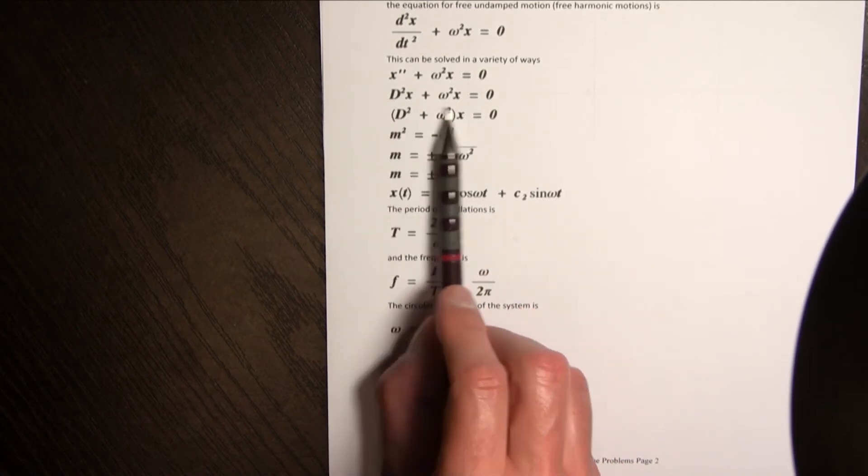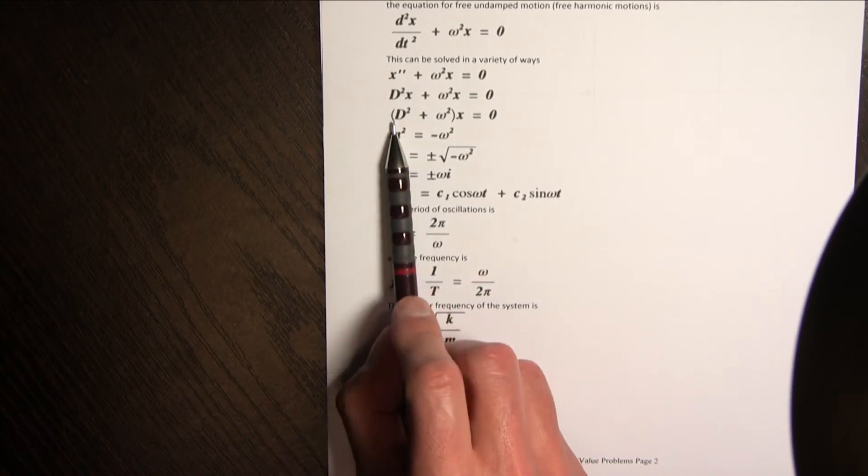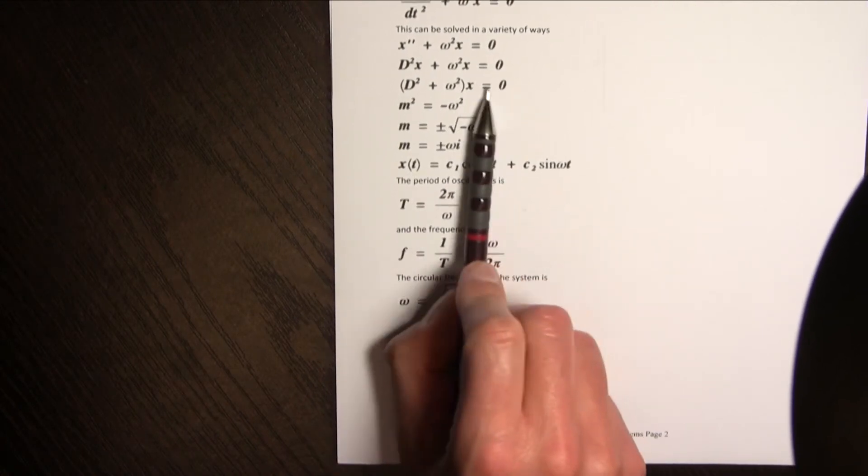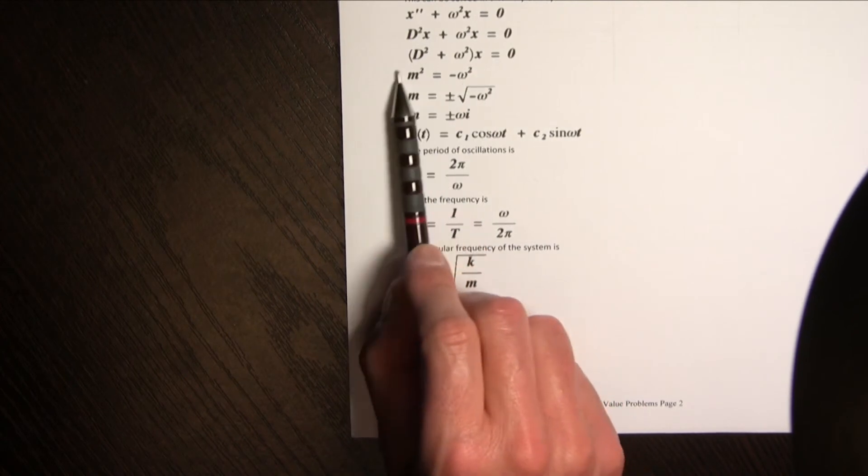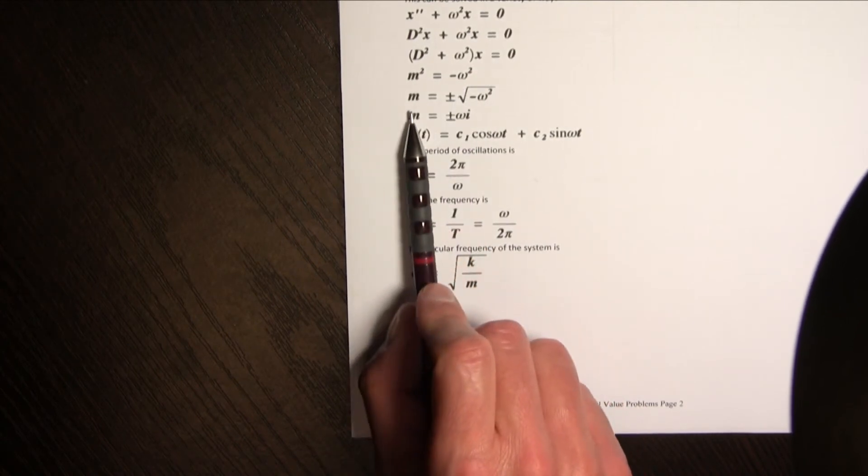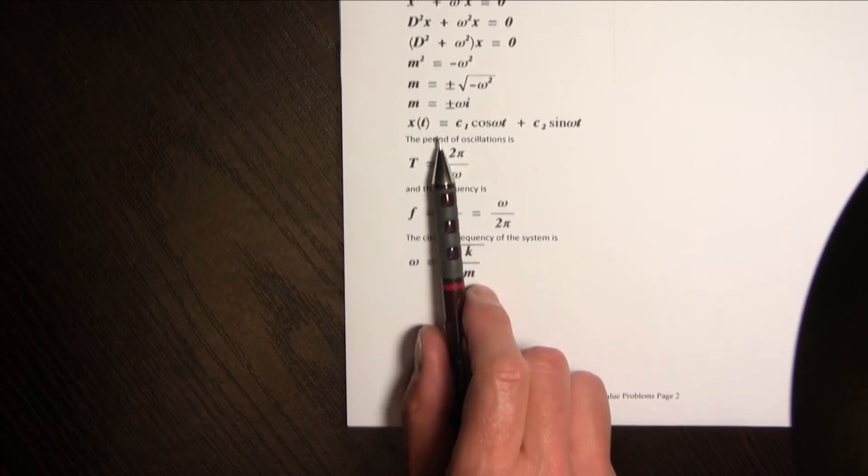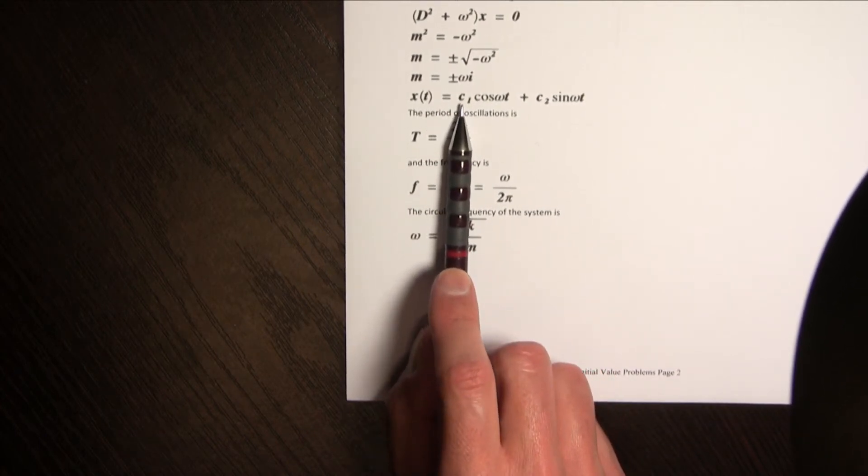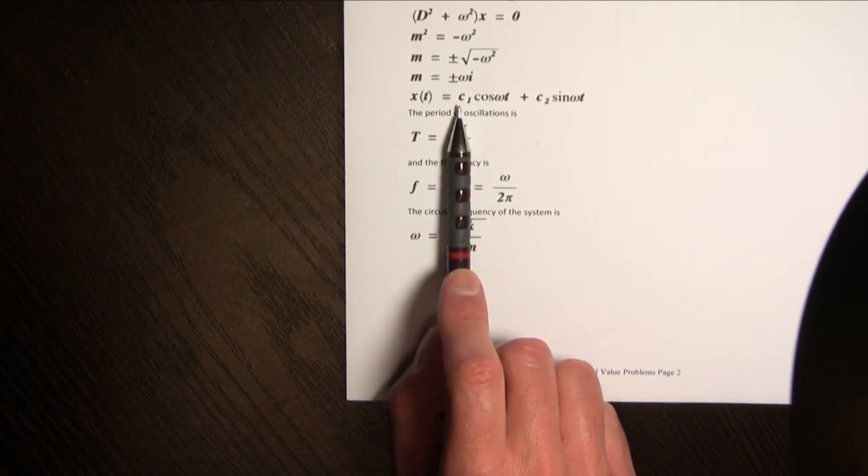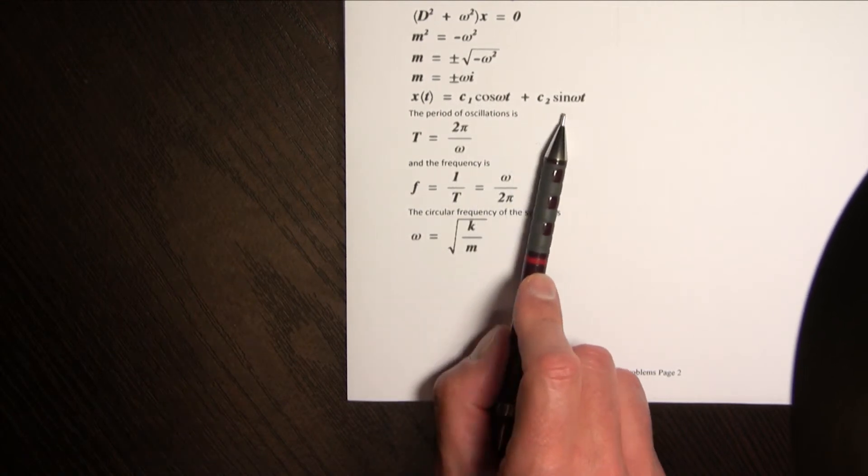Now we can just rewrite this as x double prime plus omega squared x, we can write it in differential form which will be that. Because it's homogeneous we can write the auxiliary equation which is going to leave us with m being positive or negative omega i which we know now we can solve as with alpha being zero as c sub one cosine omega t and c sub two sine of omega t.